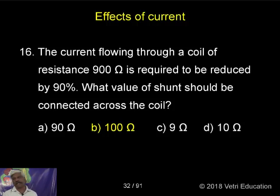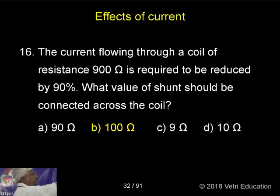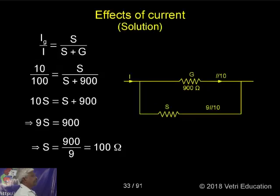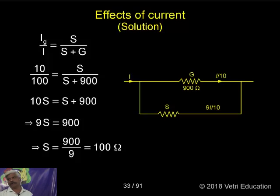This is a galvanometer. The galvanometer shunt resistance formula is: Ig by I is equal to S by S plus G. Be careful — Ig by I is equal to S by S plus G.